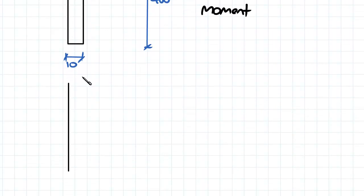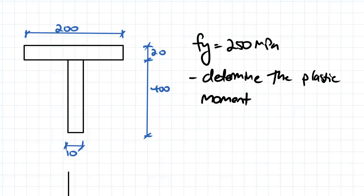So if we draw on our distribution, because as I said before, we have that equal area at the top and at the bottom, the neutral axis is going to simply lie at this location.